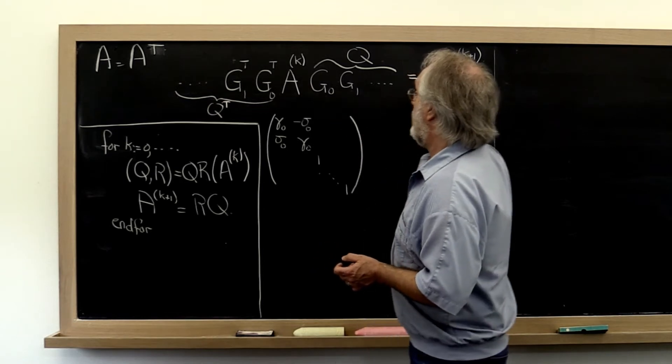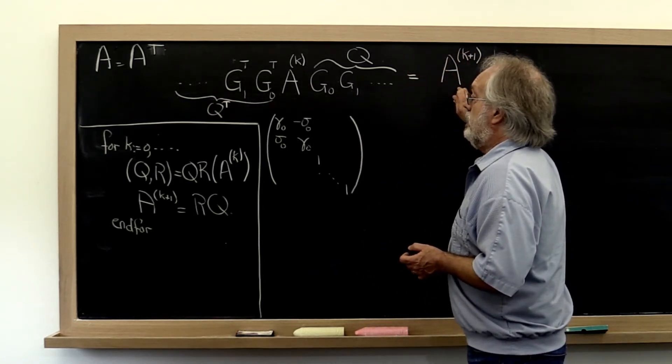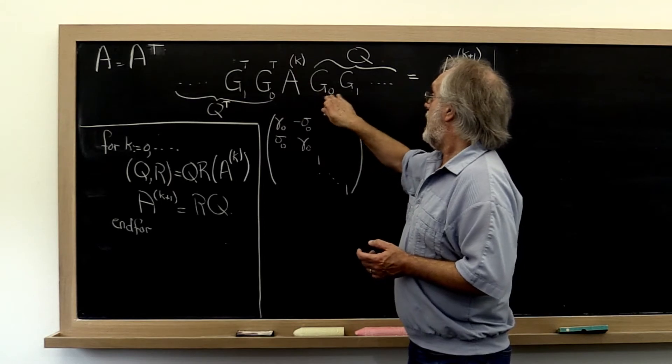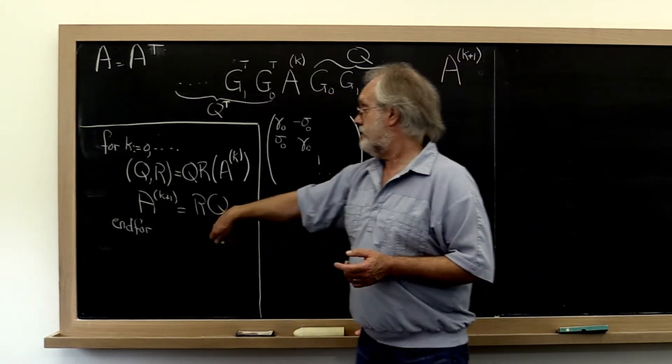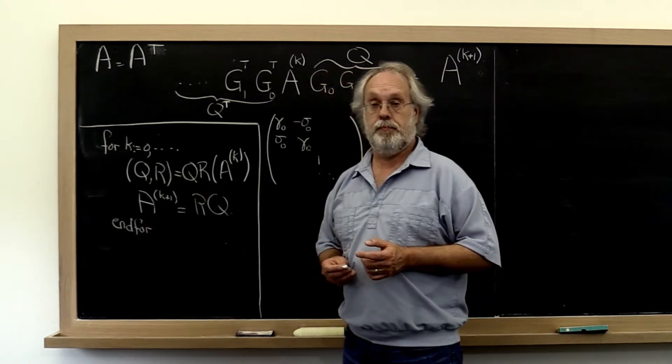And therefore our next iteration really is equal to that matrix R times the individual Givens rotations. And that gives us then A_{k+1}.